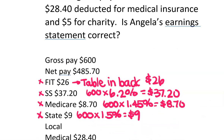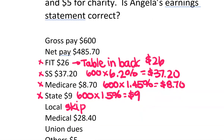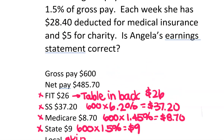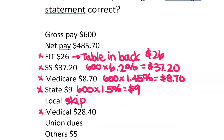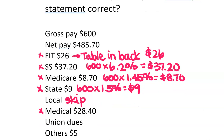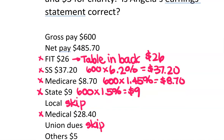Local — it didn't say anything about local, so we're just going to skip that one. Medical — it does say $28.40 deducted from each paycheck, so that is okay. It doesn't say anything about union dues, so we're going to skip that one this time. And then charity, $5.00 — so that is okay.